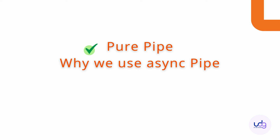So have you heard about the async pipe? Is it impure? A async pipe — I'm not very sure, but it should be impure. So that's the example I was asking about — the async pipe is an impure pipe. And why do we use the async pipe? Do you know its features?